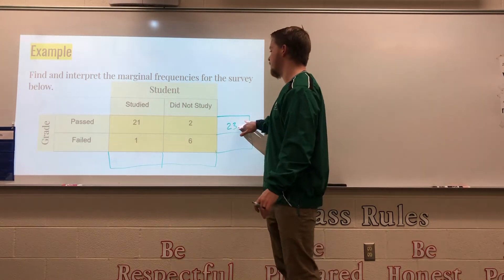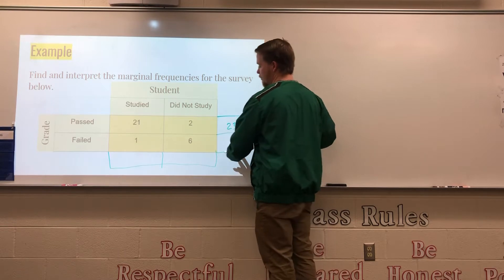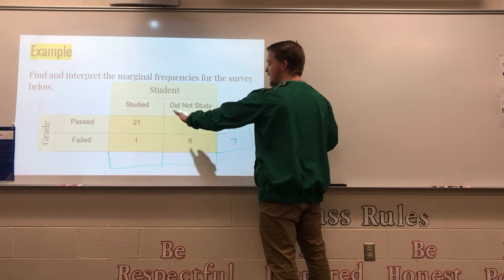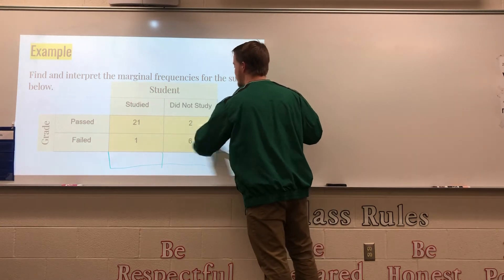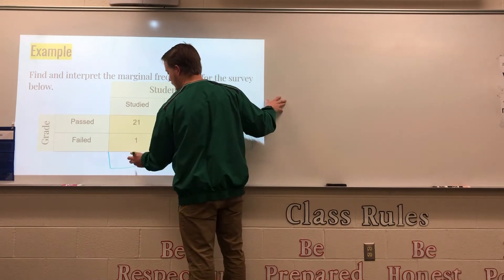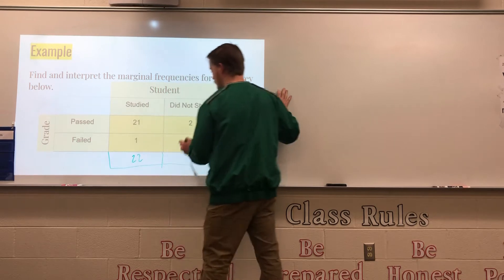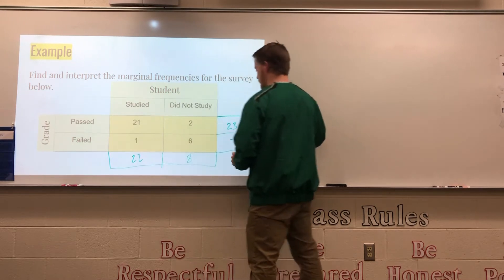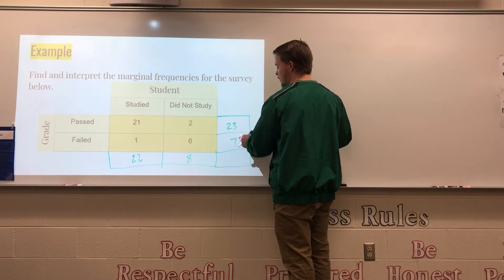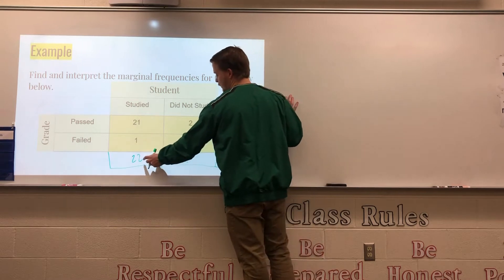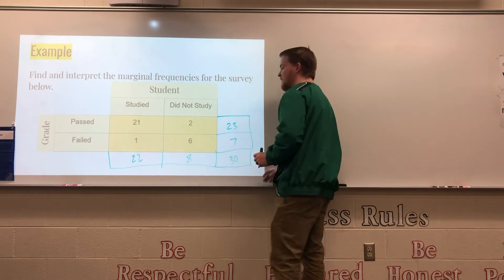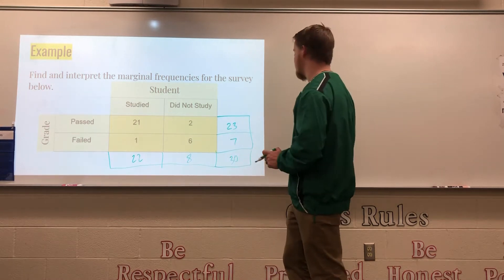The first marginal frequency is 21 plus 2, which is 23. Then 1 plus 6 gives us 7. For the columns: 21 plus 1 gives 22, and 2 plus 6 gives 8. Our overall total: 23 plus 7 is 30, and 22 plus 8 is also 30 — so the total number of students in this data set is 30.